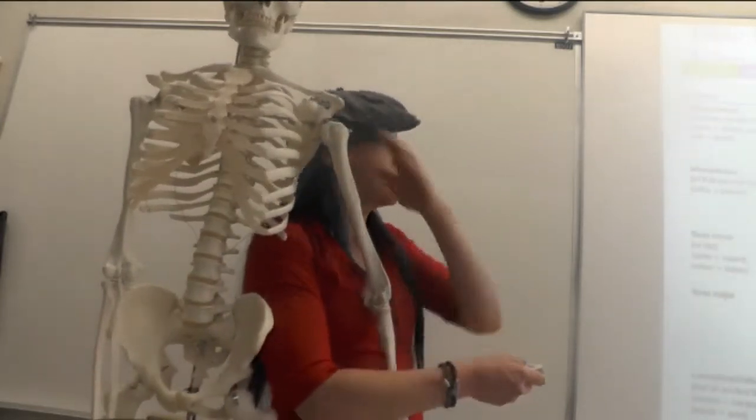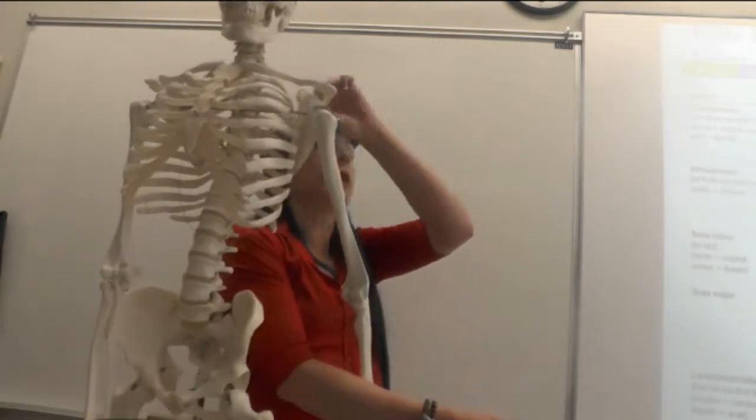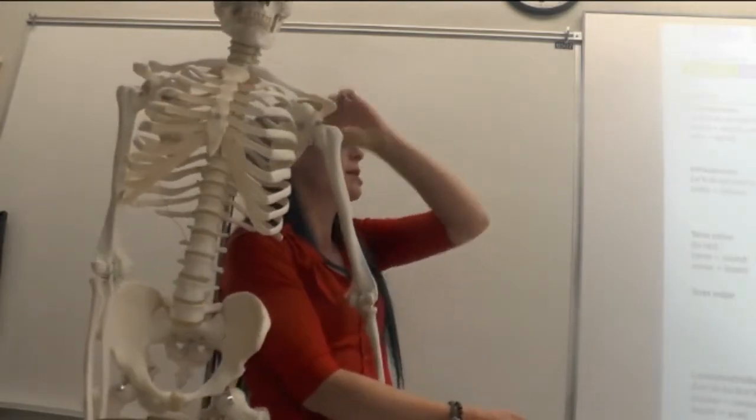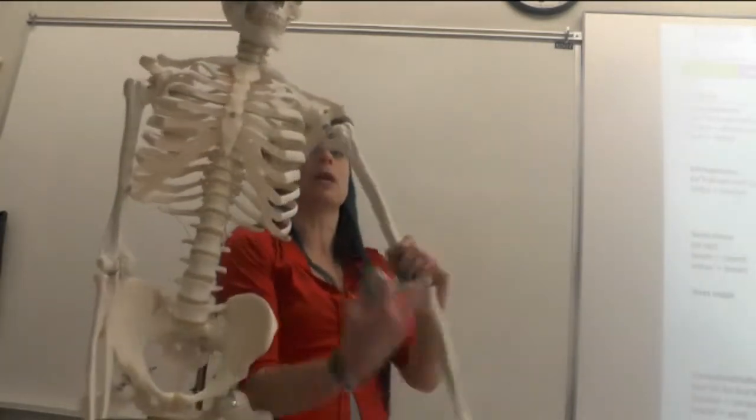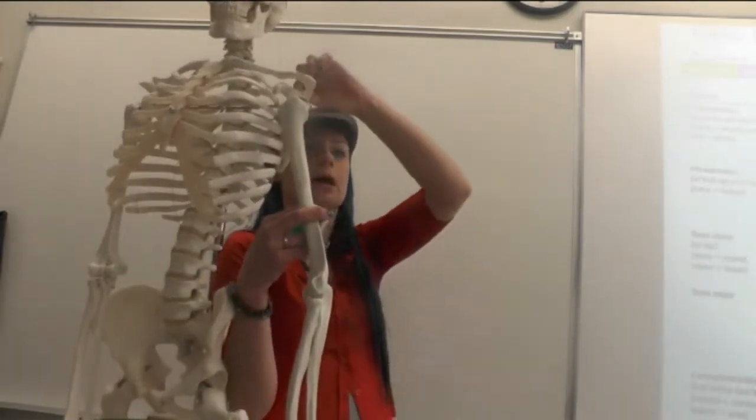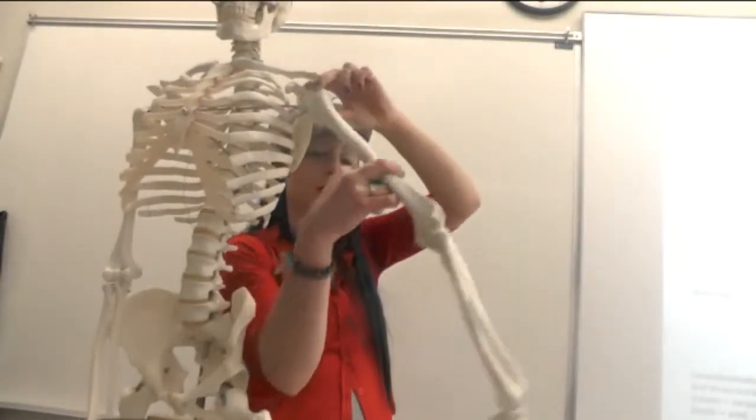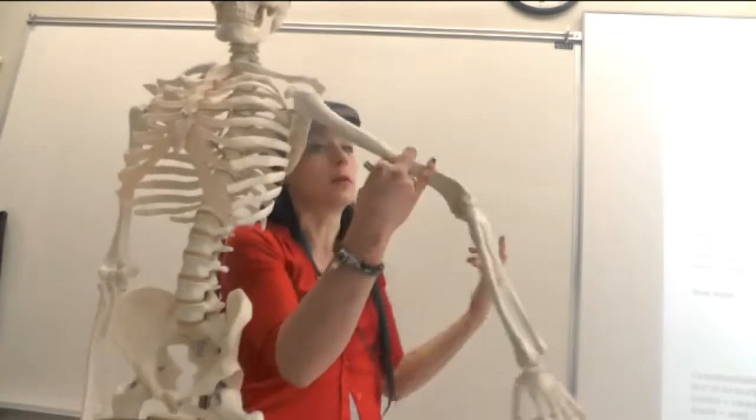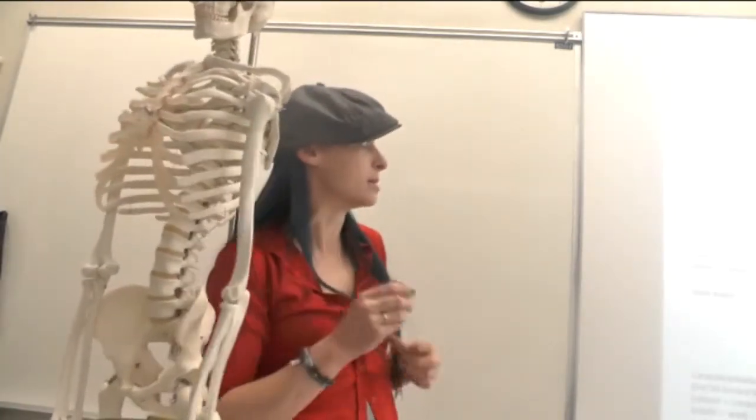For supraspinatus, this is going to be the one that initiates arm abduction, and it's going to work with deltoid. So we'll start arm abduction right here, and then deltoid will help. Deltoid's the prime mover, so supraspinatus is the synergist.